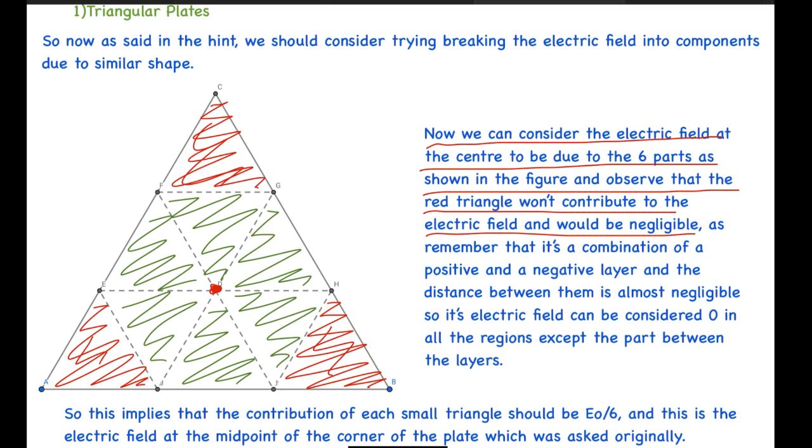very small. Remember it's a combination of positive and negative layers and the distance between them is almost negligible. So the electric field can be considered zero in all the regions except the part between the layers. This implies that the contribution of each small triangle should